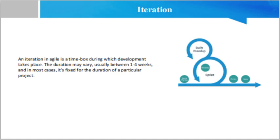Even though sprints and iterations have a lot in common and are often used interchangeably, there is a difference between both of them. Both terms are linked to scrum, a modern project management framework, and follow a specific time frame during which planned work should be completed. Sprints are more focused on productivity techniques developed by a group of individuals working on the same project, while iterations describe a development and planning process where a project is developed in small sections.